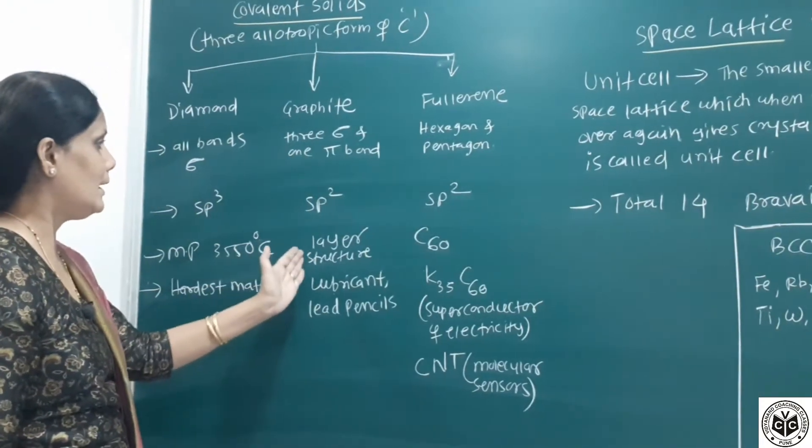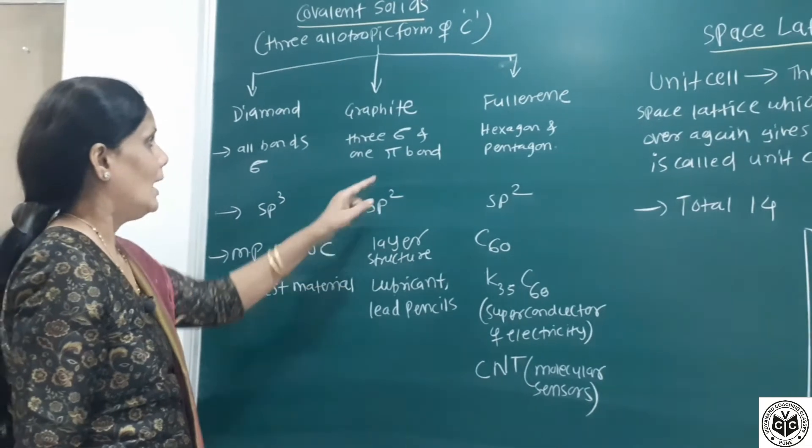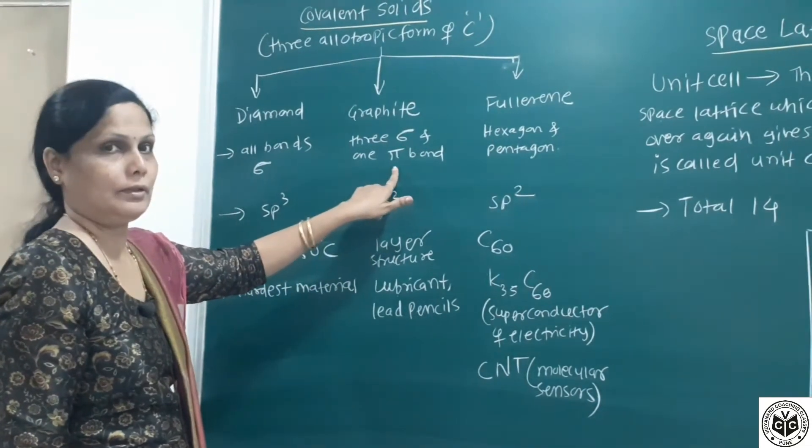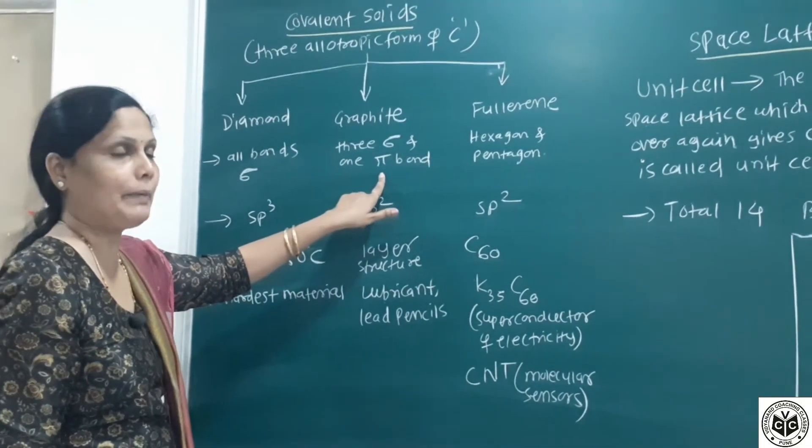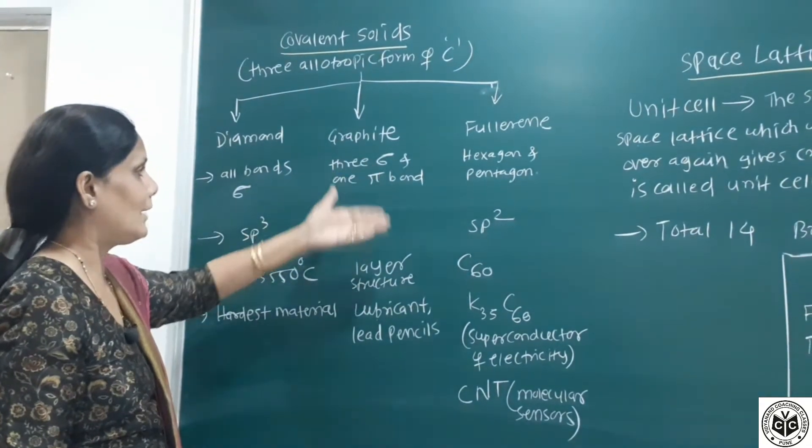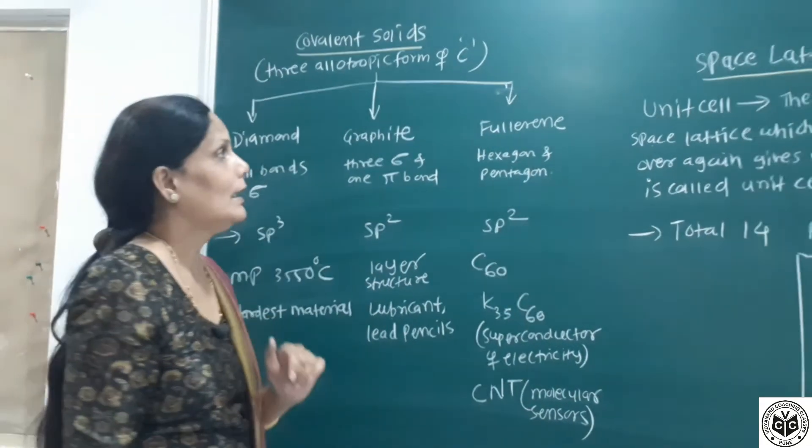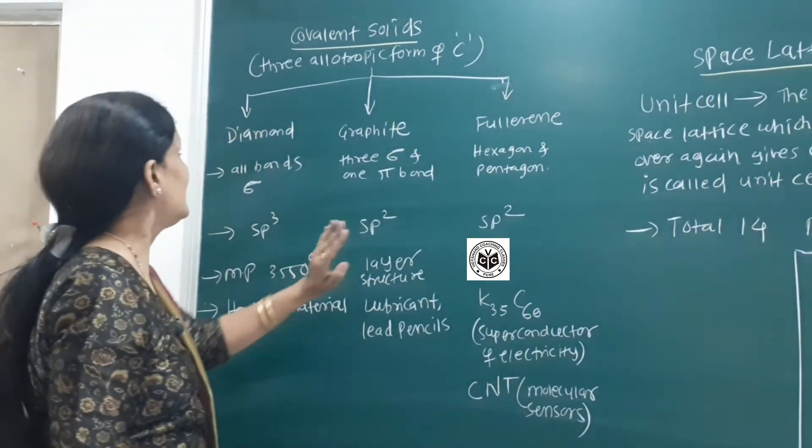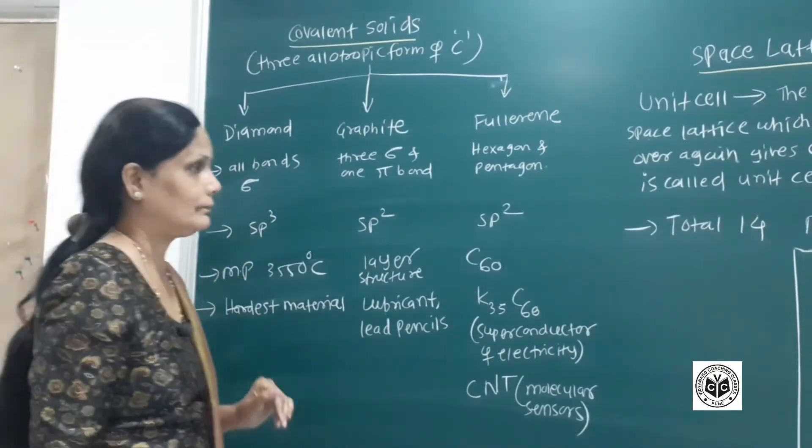Graphite has a layer structure. Because of the presence of pi bonds, free mobile pi electrons are there. That's why graphite is a good conductor of heat and electricity. These are the three allotropic forms of carbon.